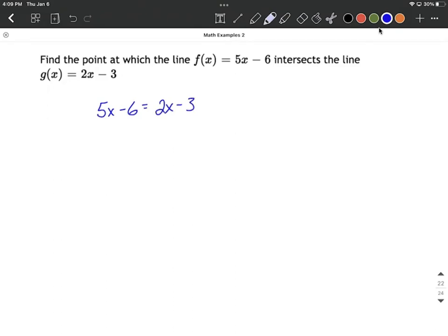Now what we have is a linear equation. For linear equations, we want to get all the variables on one side. I'm going to put them all on the left-hand side. We can do that by subtracting 2x from both sides.